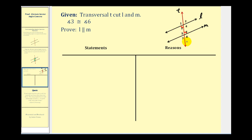Before we start, we want to devise a strategy so that we can get corresponding angles to be congruent, and therefore the lines will be parallel. Notice that angle two and angle six are corresponding angles, and angle two happens to be a vertical angle with angle three. So by using the definition of vertical angles, we can say that angle three and angle two are congruent, and then that angle two is congruent to angle six, and therefore the lines will be parallel. So let's go ahead and get started.